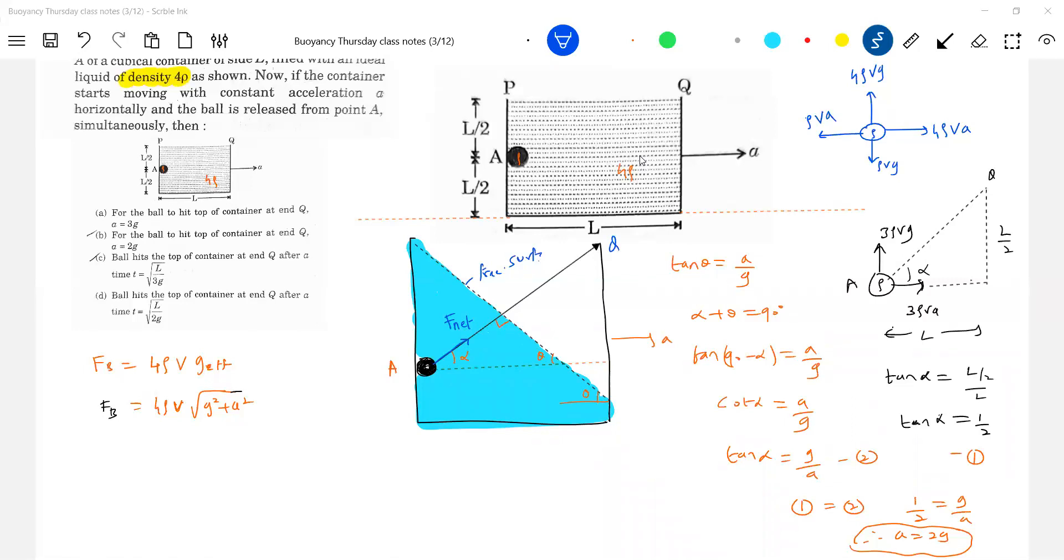Now option B. What I got? Ball hits the top of container at end Q after a time. After what time it will hit? Actually it is fully filled up. This is actually fully filled up. To make you understand I just shown here the inclination. It's a fully filled up. Look at rho V. Rho V is what? Mg. Mg is what I am taking still. Mg and here buoyant force. This again buoyant force due to acceleration. This is pseudo force. Rho V is what? Mg is acting here.